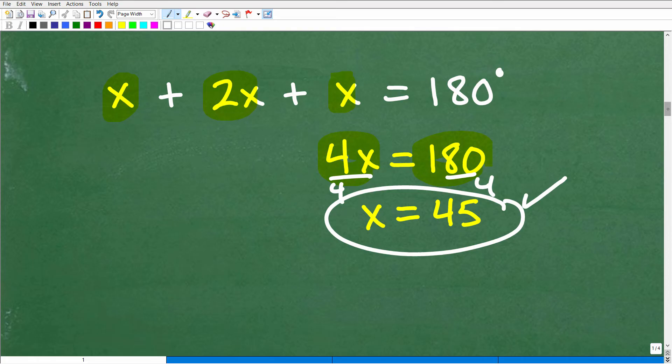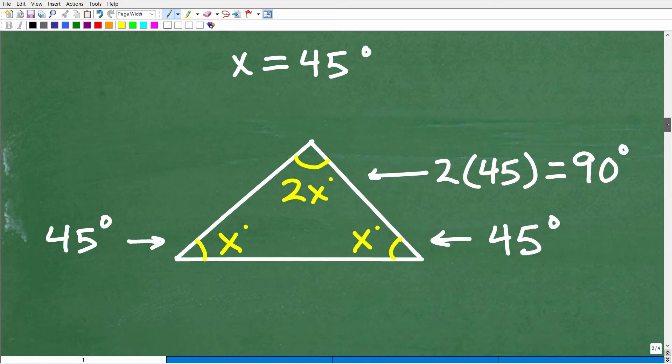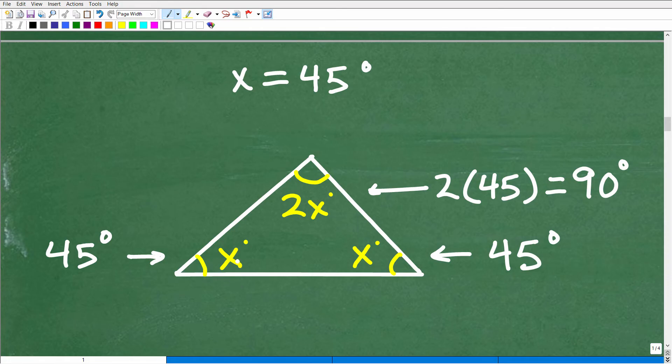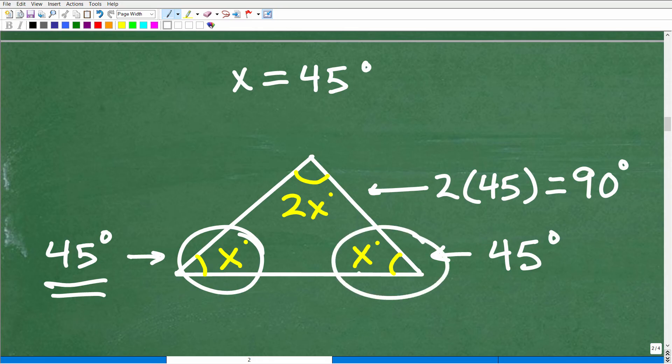So what does that mean? Well, x is equal to 45. So remember, back in our figure here, we're talking about x degrees. So this angle right here is 45 degrees. This angle right here was also x degrees, so this is 45 degrees here. And this angle is 2x, so that's going to be 2 times 45, which of course would be 90 degrees.